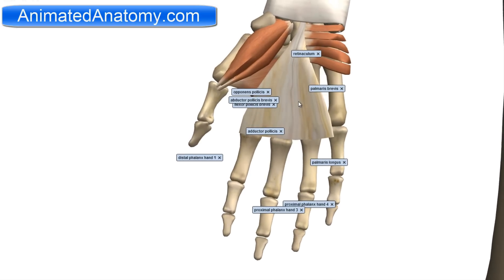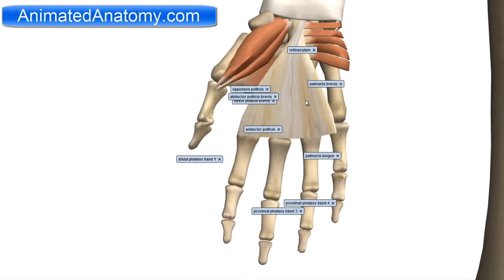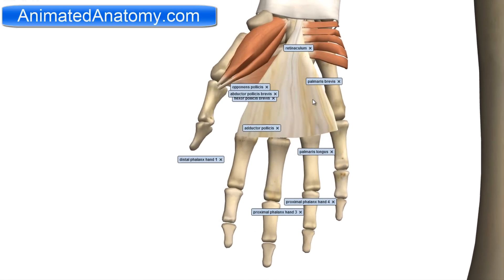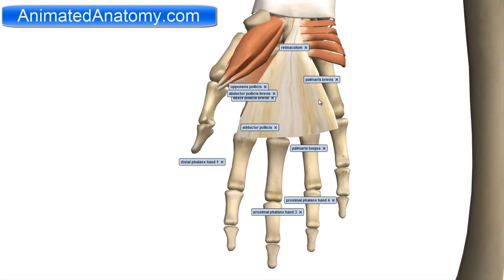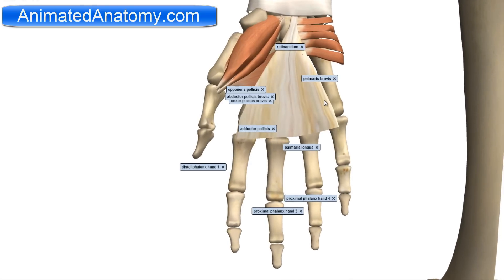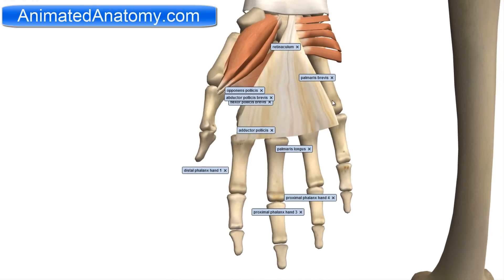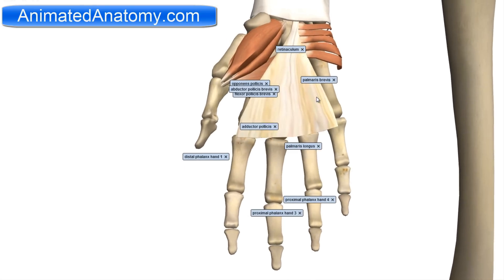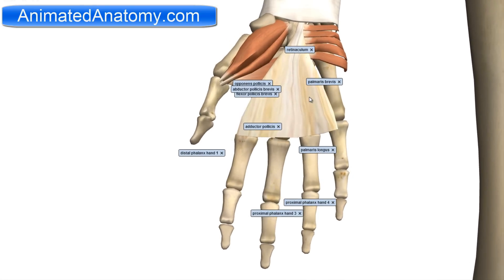The rest of the muscles in the medial compartment are the hypothenar muscles. They serve for the control of the little finger.